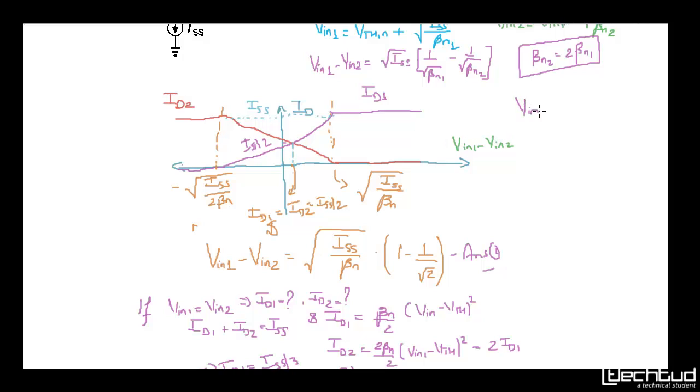I am saying that vin1 should be greater than vin2 to have id1 equal to id2. The reason is that w/l of 1 is less than w/l of 2. So overdrive has to be more.